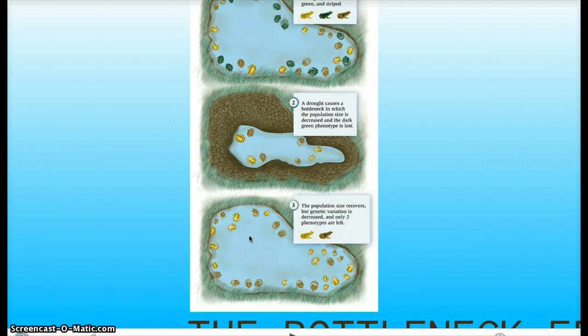And then when the pond regains its size, the frogs are able to reproduce, but there are no more green colored frogs. Hence the loss of this allele and decrease in genetic variation. We started with yellow, green, and brown. Now we're left with yellow and brown frogs.